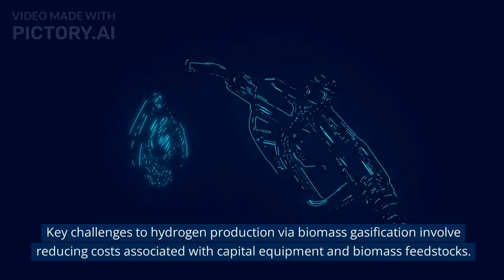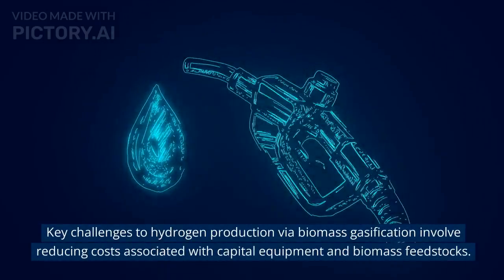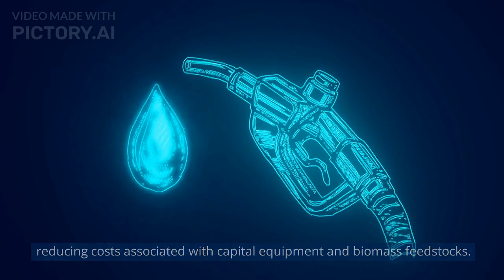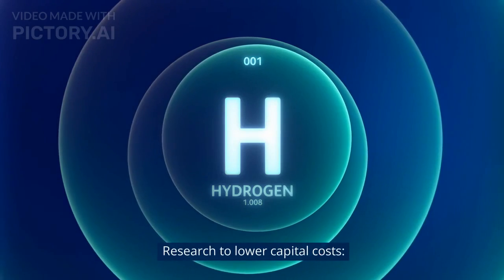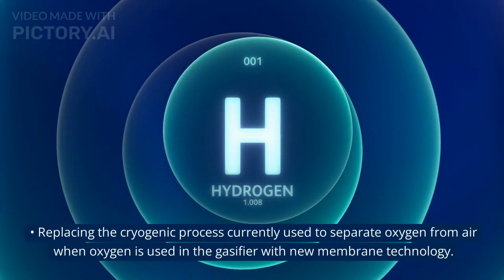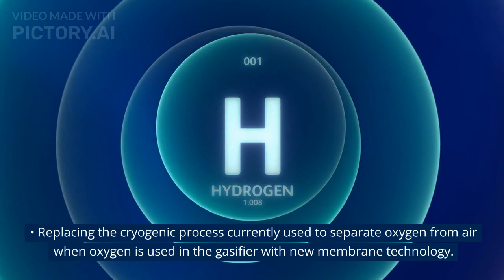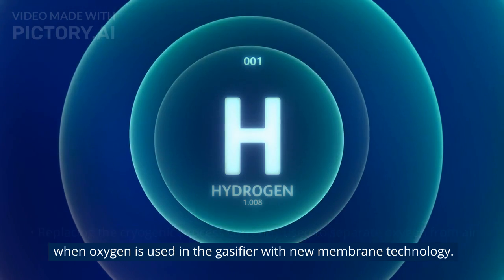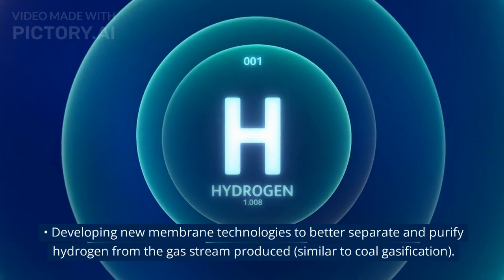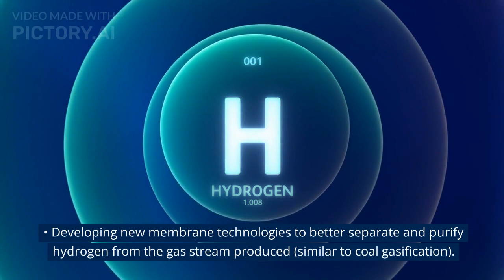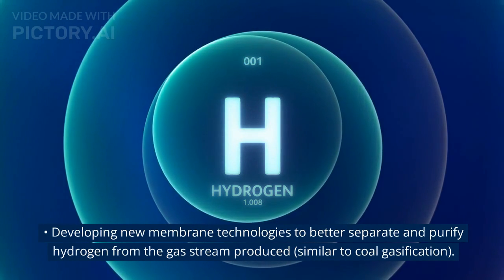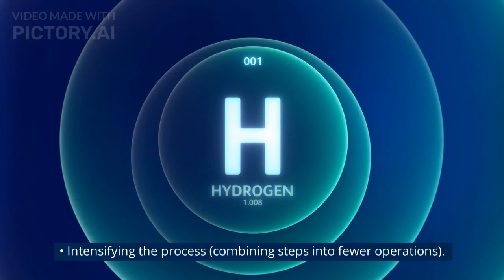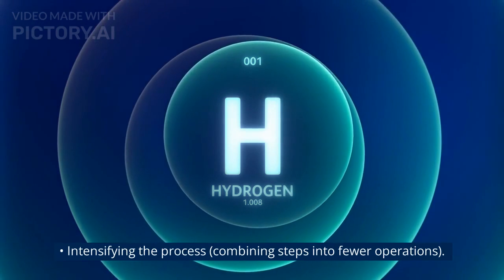Key challenges to hydrogen production via biomass gasification involve reducing costs associated with capital equipment and biomass feedstocks. Research to lower capital costs includes replacing the cryogenic process currently used to separate oxygen from air with new membrane technology, developing new membrane technologies to better separate and purify hydrogen from the gas stream produced, similar to coal gasification, and intensifying the process by combining steps into fewer operations.